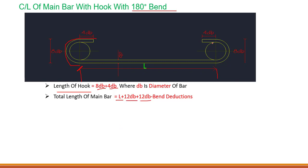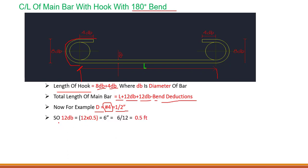The total length L is: L plus 12db plus 12db from both ends, minus the bend deductions. Since this is a 180-degree angle, we need to account for the bend deduction. For example, if the bar diameter is 4 number (half inch), then 12db equals 12 x 0.5 inch = 6 inches, which is 0.5 feet.